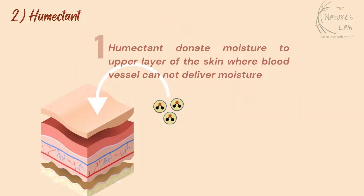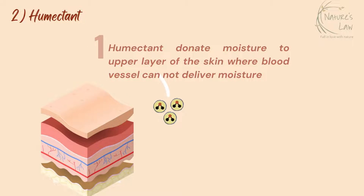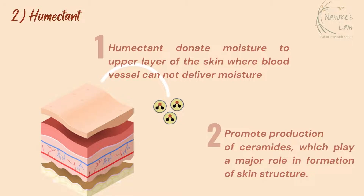Second is humectant. As I mentioned, blood vessels cannot deliver moisture to the upper layer of the skin. But humectant donates moisture to the upper layer of the skin and keeps skin hydrated. Also, humectant promotes the production of ceramides, which plays a major role in the formation of skin. Third is emollient.